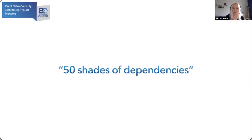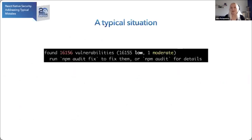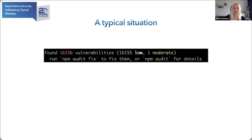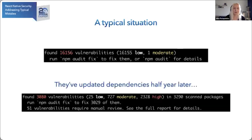Getting back to dependencies: a typical React Native project has a lot of dependencies, and they bring a lot of vulnerabilities. This is a real-life project I worked on. We created a task for the team to update dependencies and review vulnerabilities. Sometime later, after the update, I'm not sure what is better: to have 16,000 low vulnerabilities or 2,000 high ones.